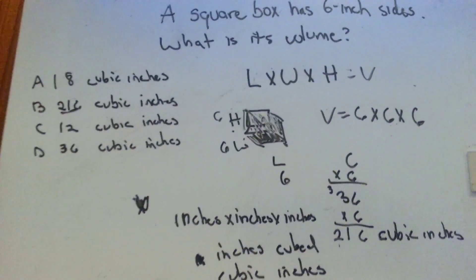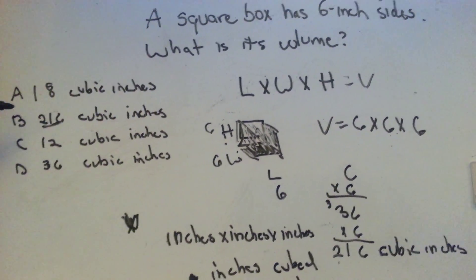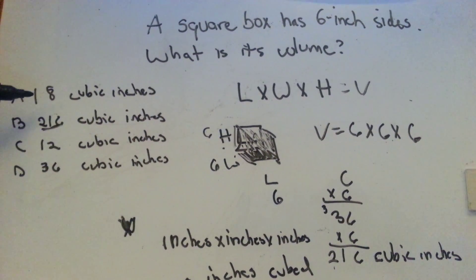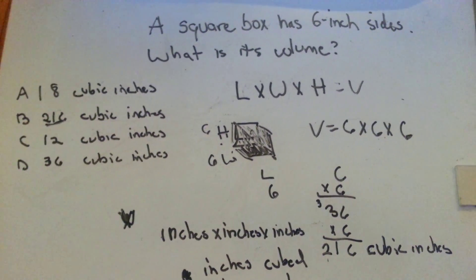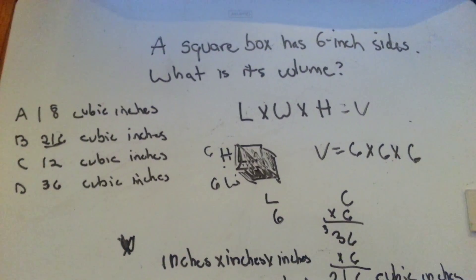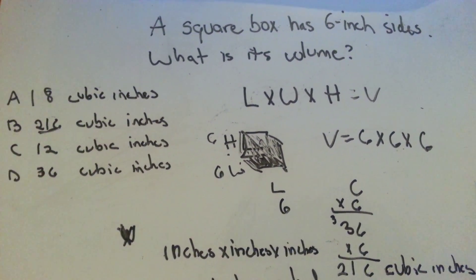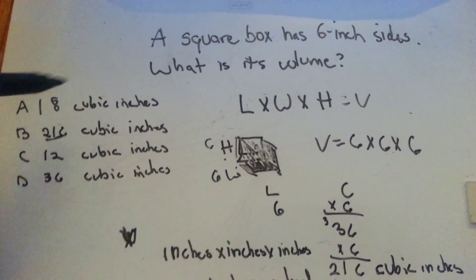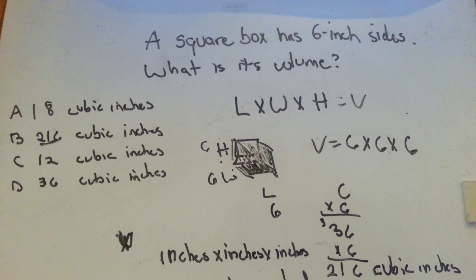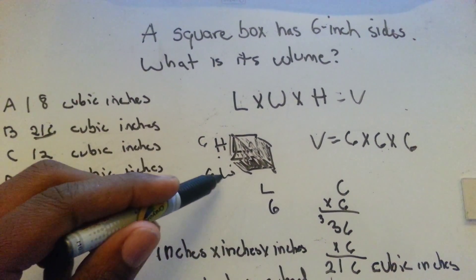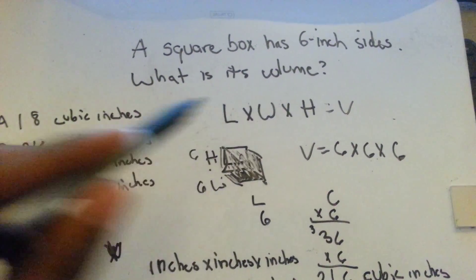And these answers over here, why they chose these answers is for people that don't know what they're doing pretty much. So you come up with eighteen if you use the wrong formula, you use the formula for area of something instead of volume, area is length times width, and you'd also have to do that wrong. If you knew that volume was the three dimensions length, width, and height but you added them instead of multiplying them, then you would get six plus six plus six which would equal eighteen.